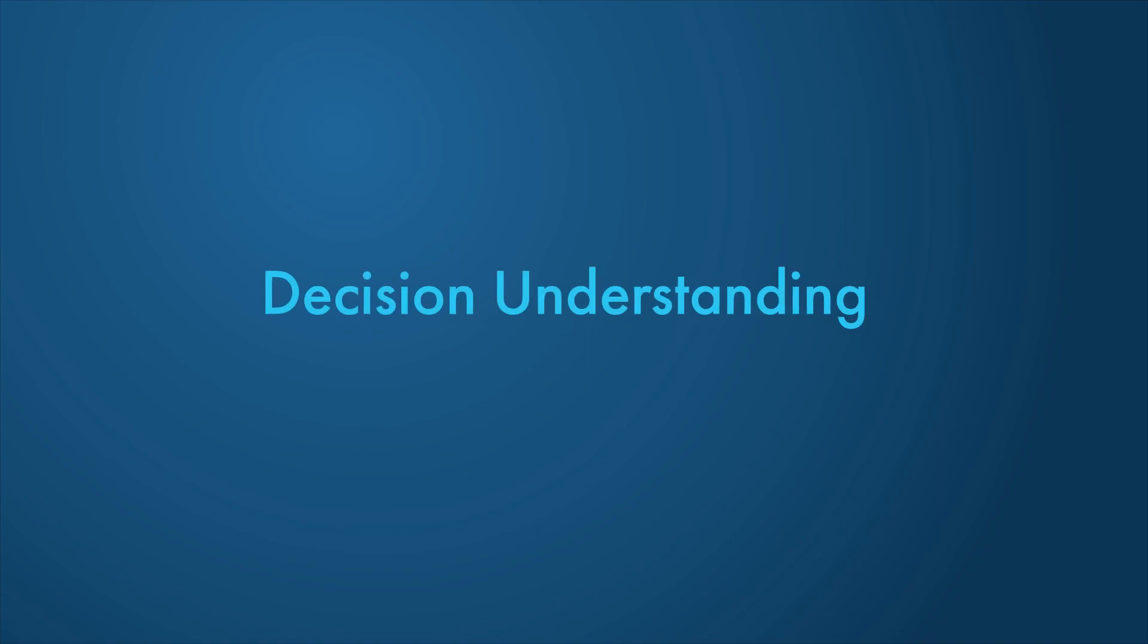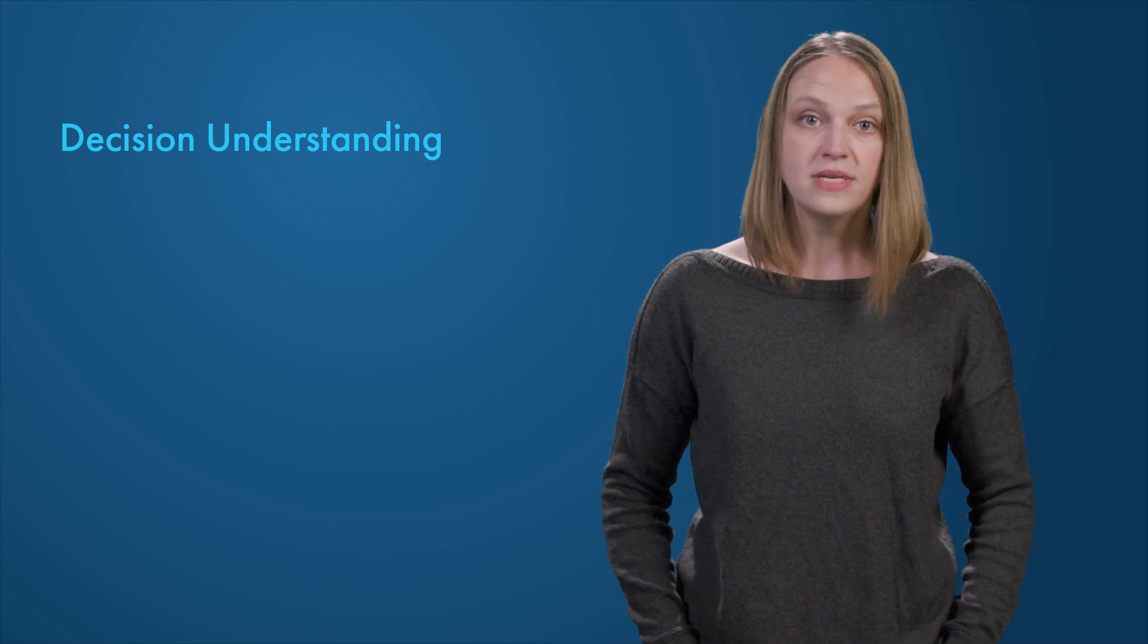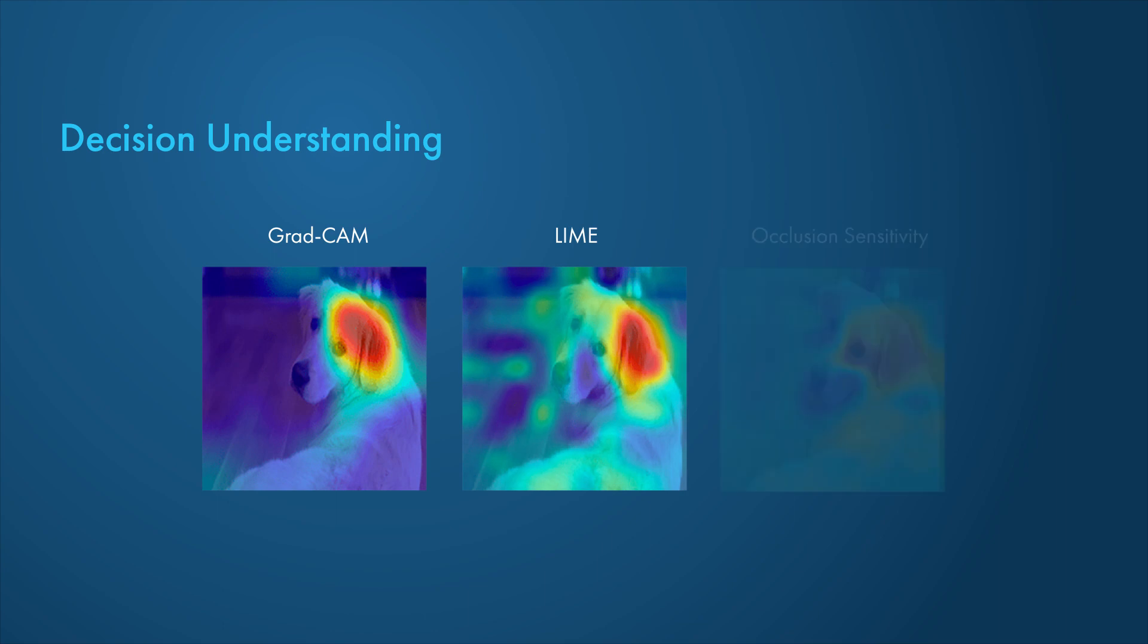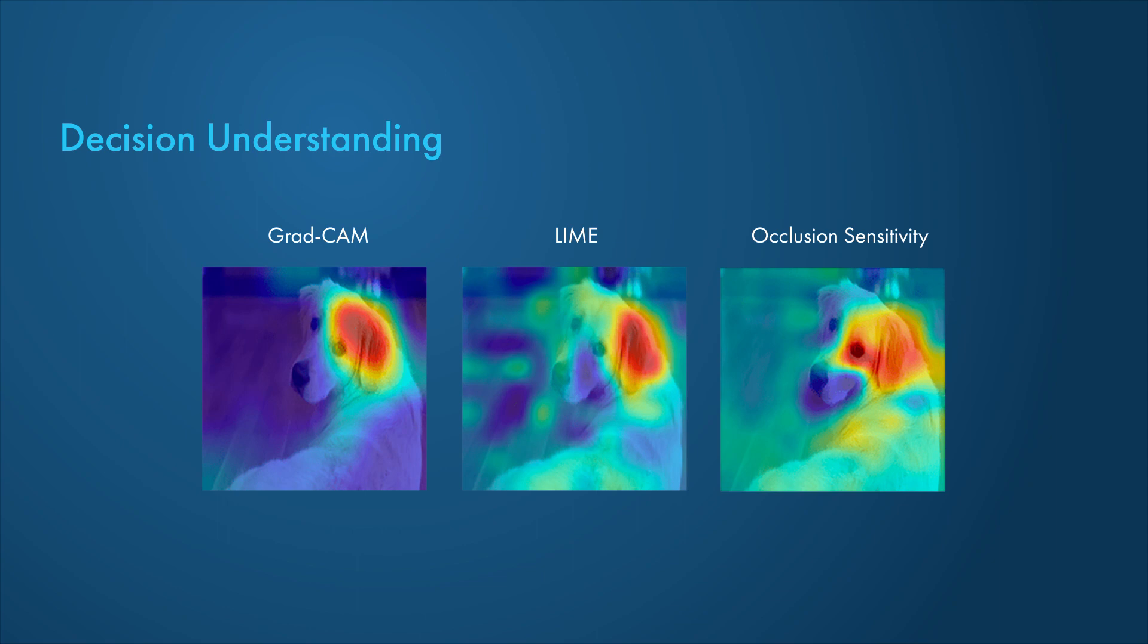Explainable AI techniques are useful when you are using models that are not inherently explainable, such as a deep learning model. In this case, popular techniques such as GradCAM, LIME, and occlusion sensitivity can be used to visualize which features of the input influence the decision of the AI model.